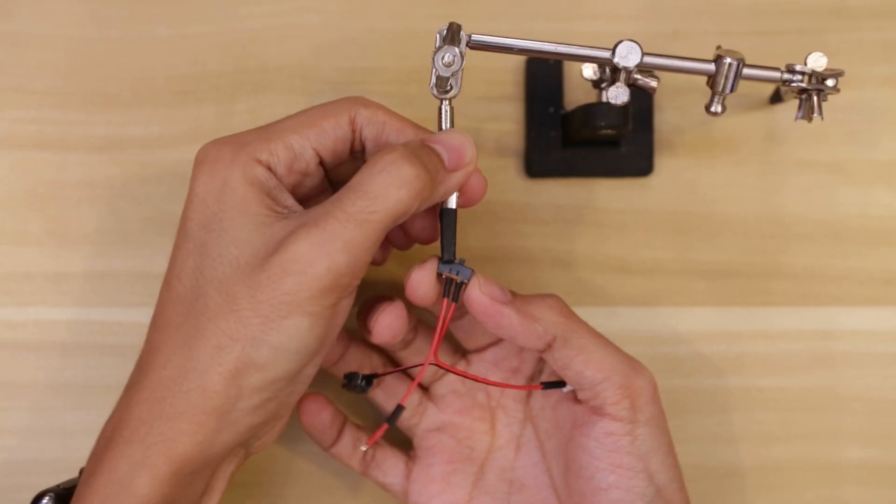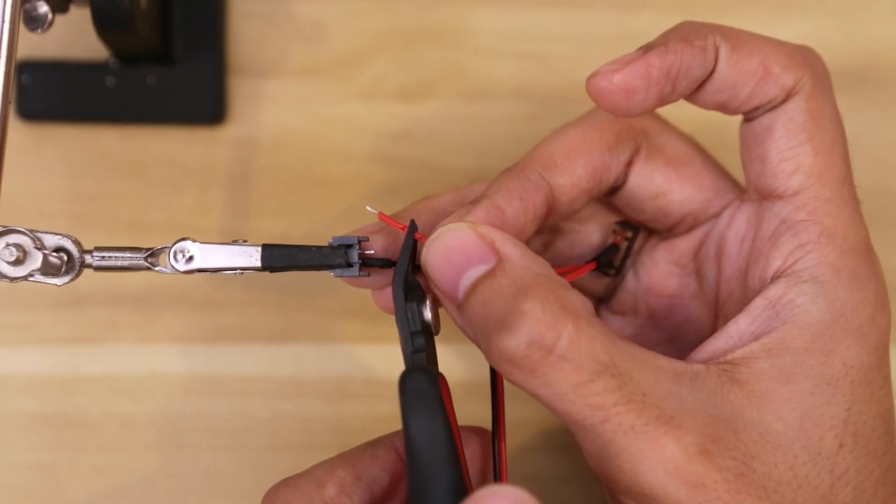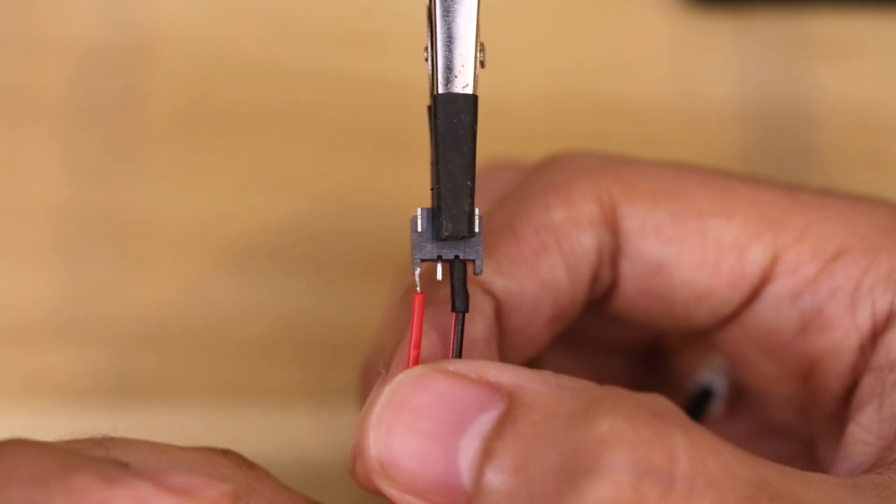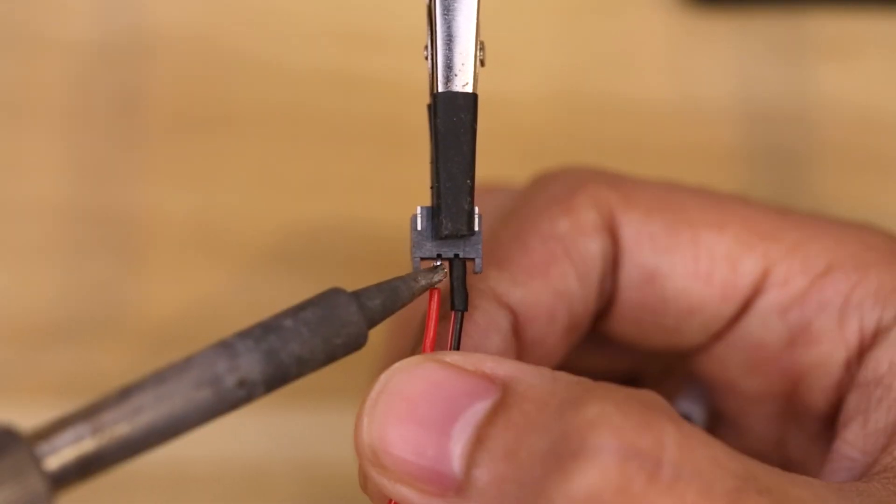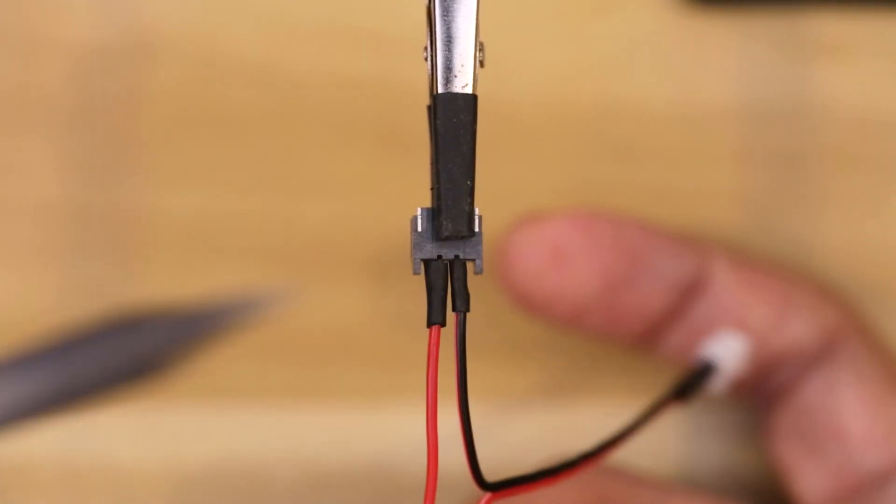After that swap out the slide switch with the female JST connector. You might find the red wire is a little bit longer than needed so we can trim it down to size. Once it's cut to size, we can then solder it onto the positive electrode on the female JST connector and cover up the exposed connection with our last piece of heat shrink tubing.